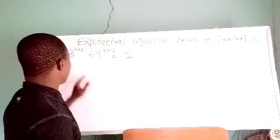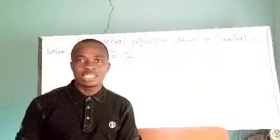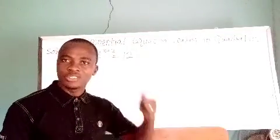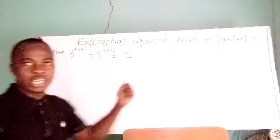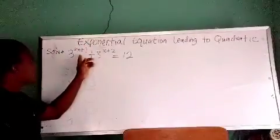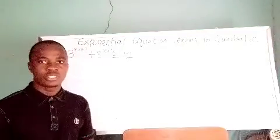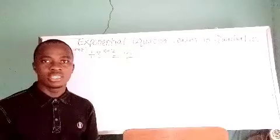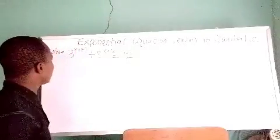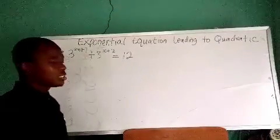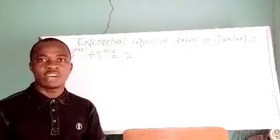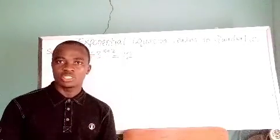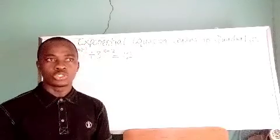Now we can see that the equation given to us is exactly what we mean by an exponential equation. If you look at it very well, you see that the variable is at the position of the exponent. Because of that, we say this equation is an exponential equation. Now we are going to apply the rule of indices here, so I advise you to do a revision on the rule of indices.